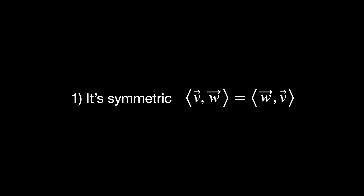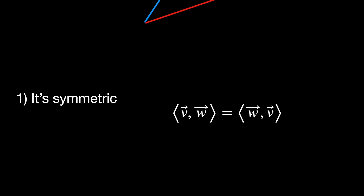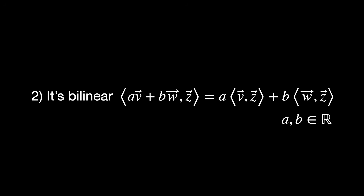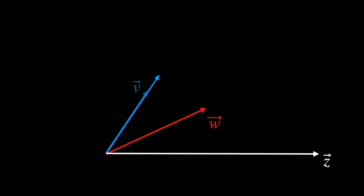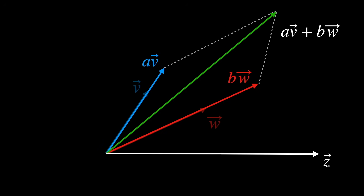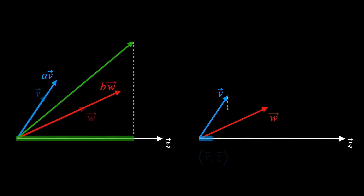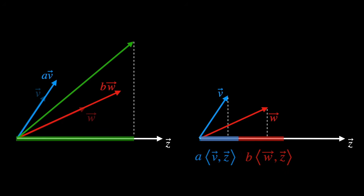In a Riemannian manifold, we also require the inner product to be Euclidean, so three conditions must be satisfied. First, it is symmetric: projecting the first vector's length onto the second, or vice versa, produces the same result. Second, it is bilinear: if you scale one vector by A and another by B, then add them, and project the result onto a third vector Z, you get the same outcome as projecting each vector onto Z first, scaling those projections, and then adding them together.